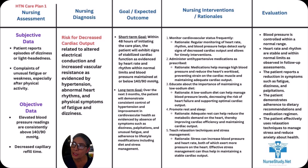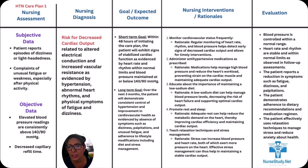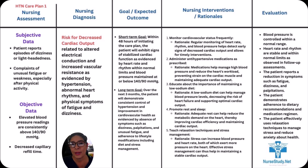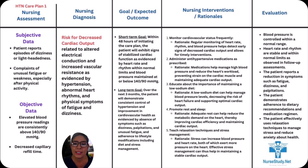We have three nursing care plans today. The first one is going to be risk for decreased cardiac output. The subjective data — that's basically what the patient reports — includes dizziness, lightheadedness, headaches, and complaints of unusual fatigue and weakness, especially after physical activity.